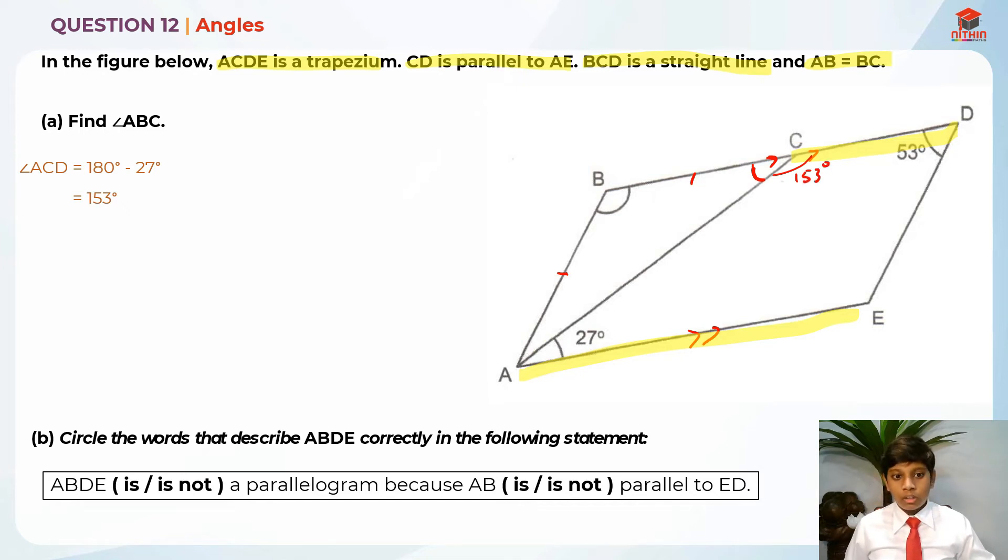After that, it's really easy to find this angle BCA. So I'm going to take 180 degrees minus 153 degrees, which is 27 degrees. I think you realize something here. This angle is equal to this angle over here.